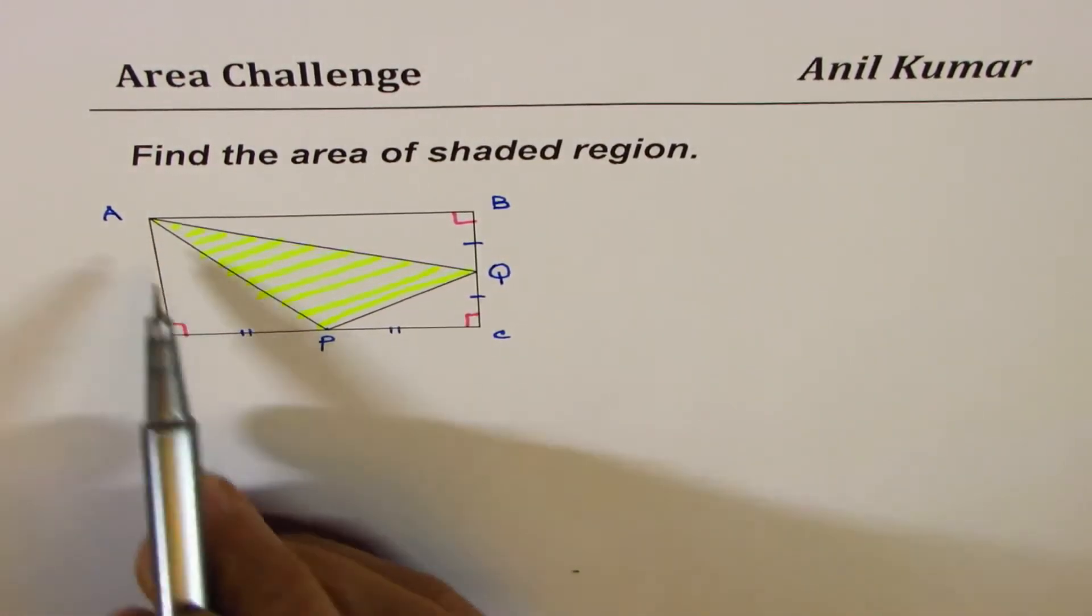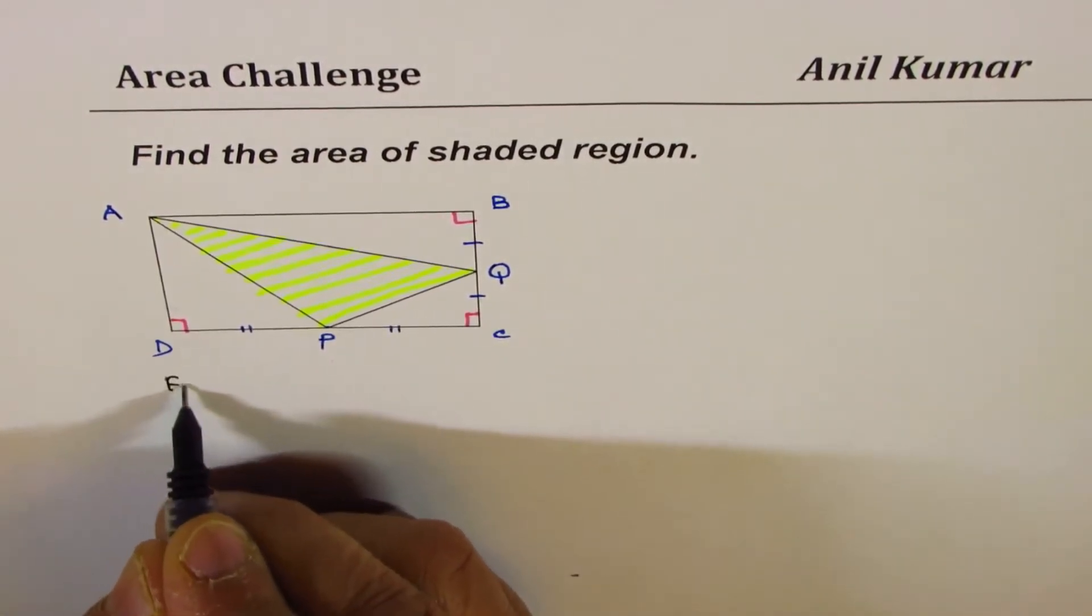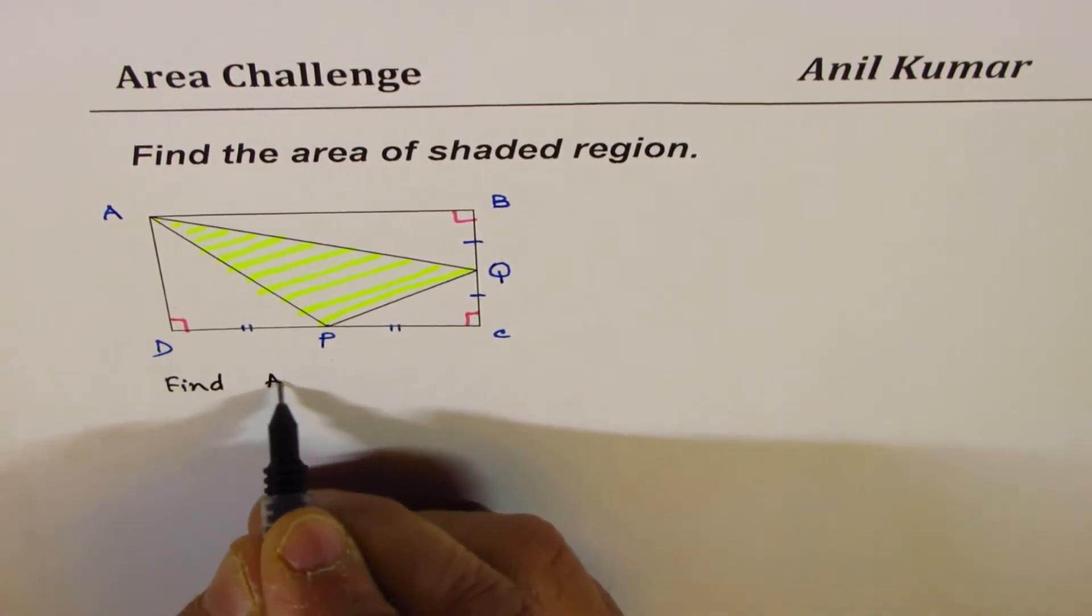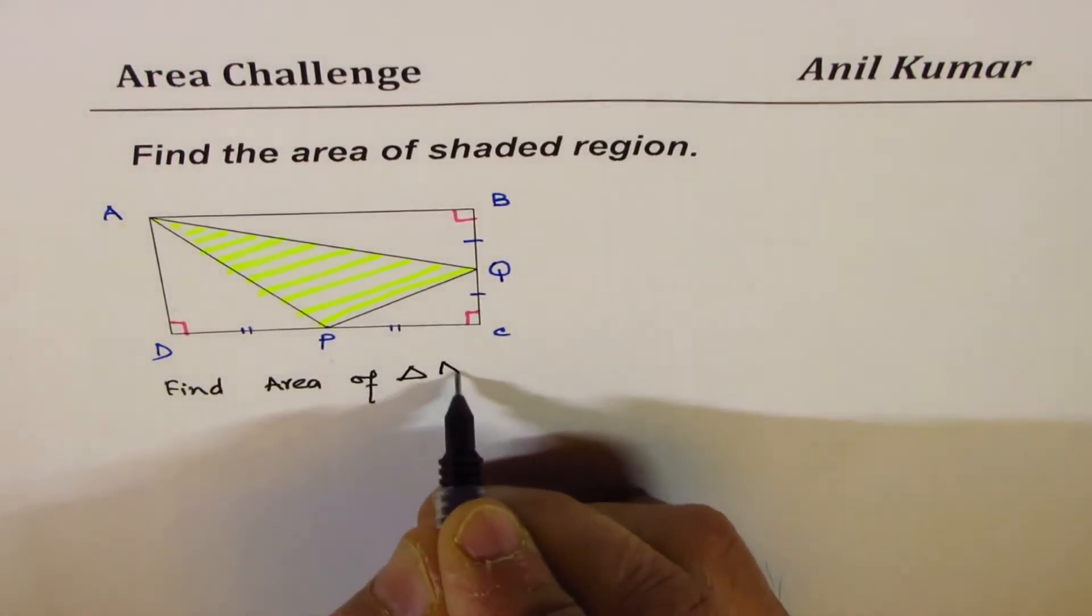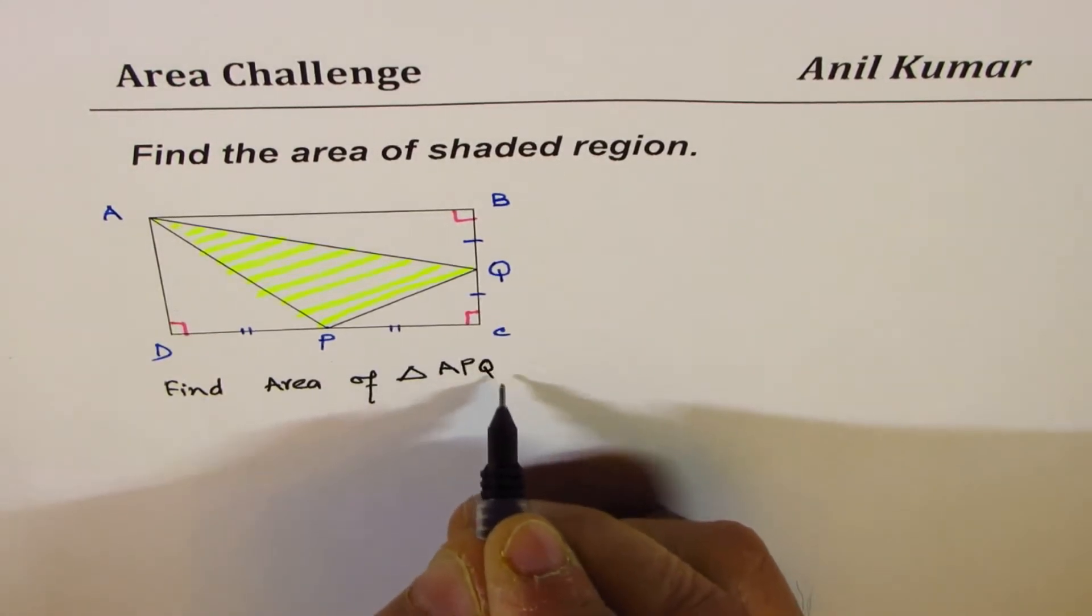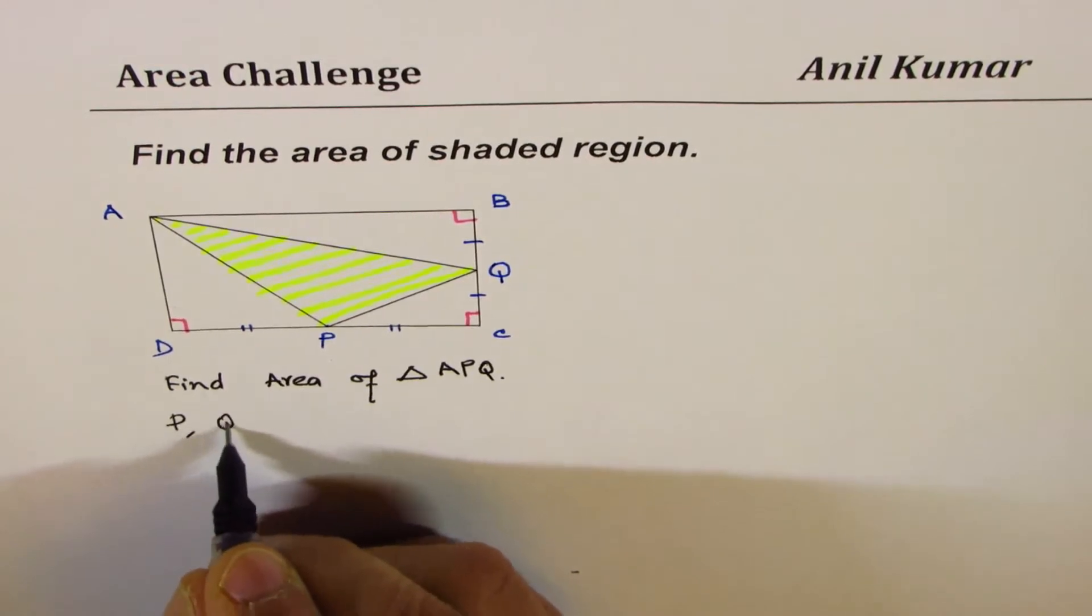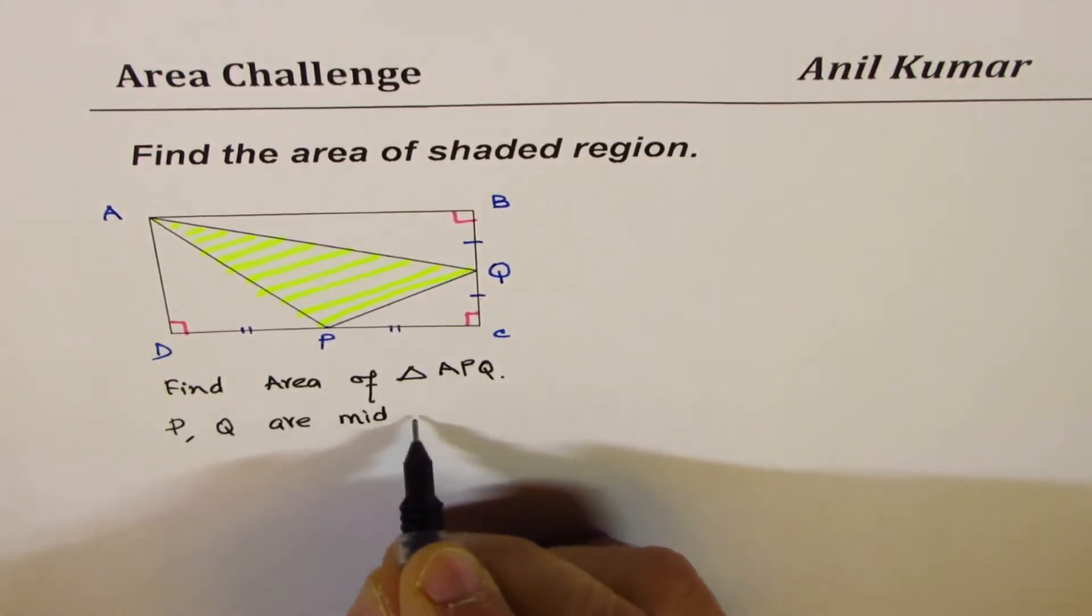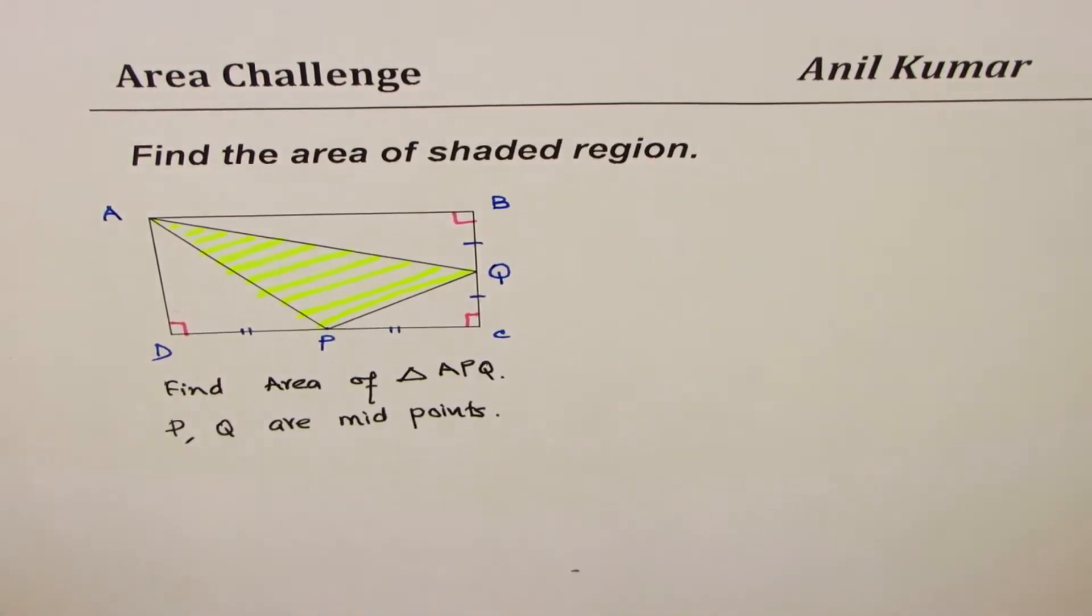You need to find area of this triangle APQ. So the question here is: find area of triangle APQ. And as you can see, P and Q are midpoints.